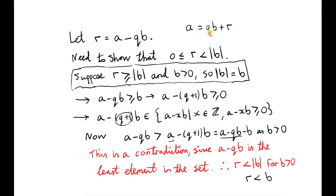So basically, we have found integers q and r, where r is just a minus qb. Since r comes from our set, r is non-negative. We now need to show that r is less than the magnitude of b.